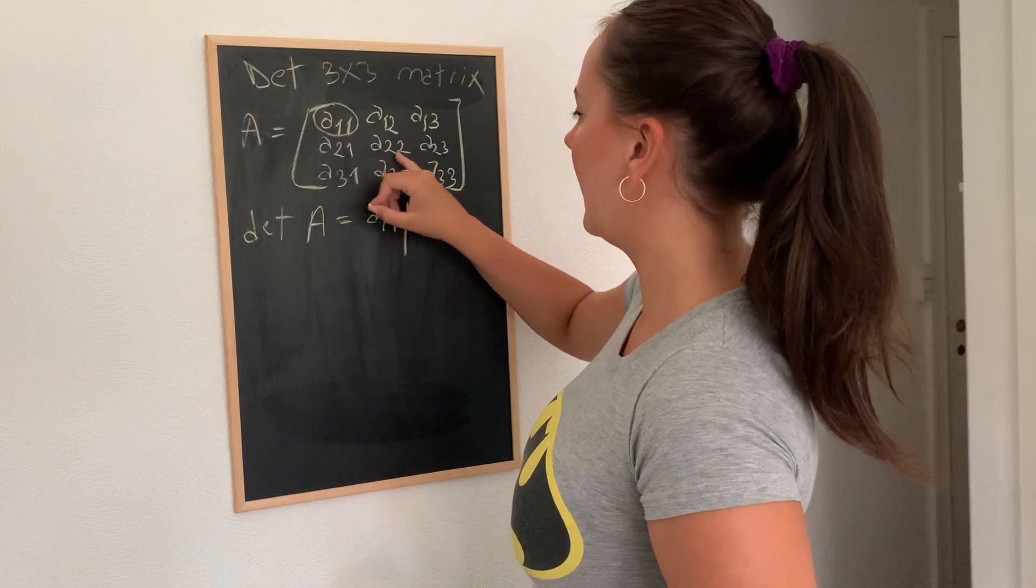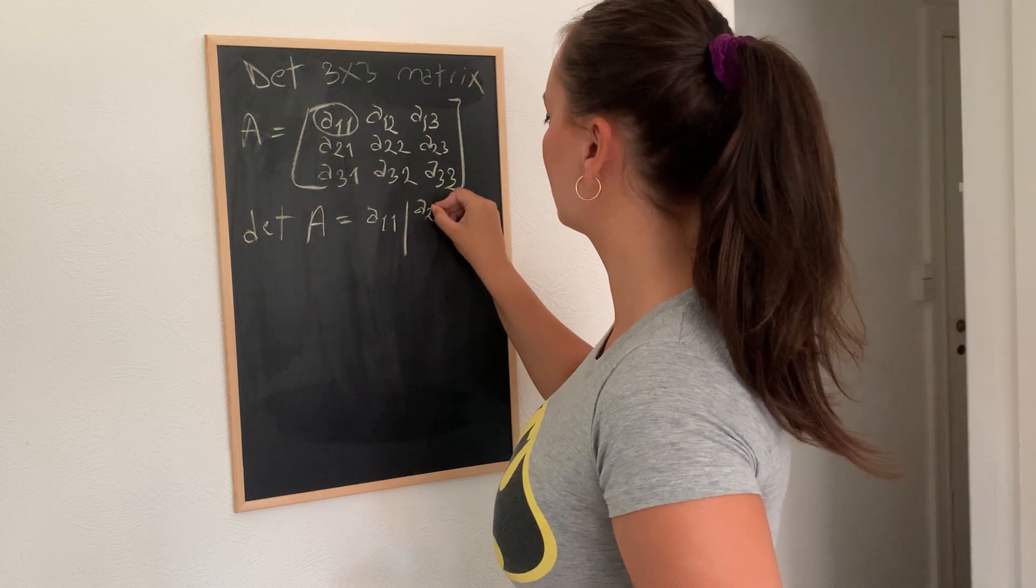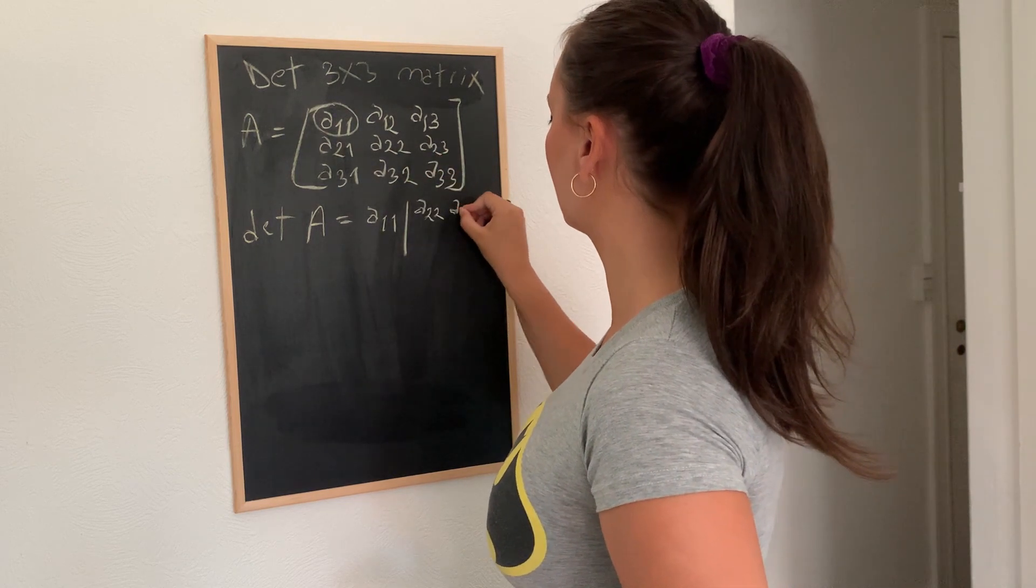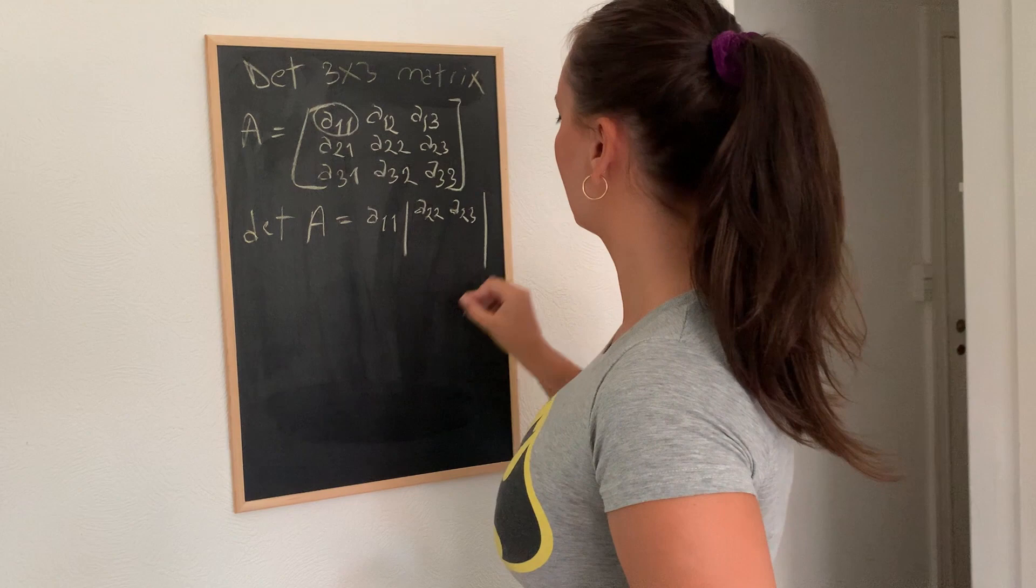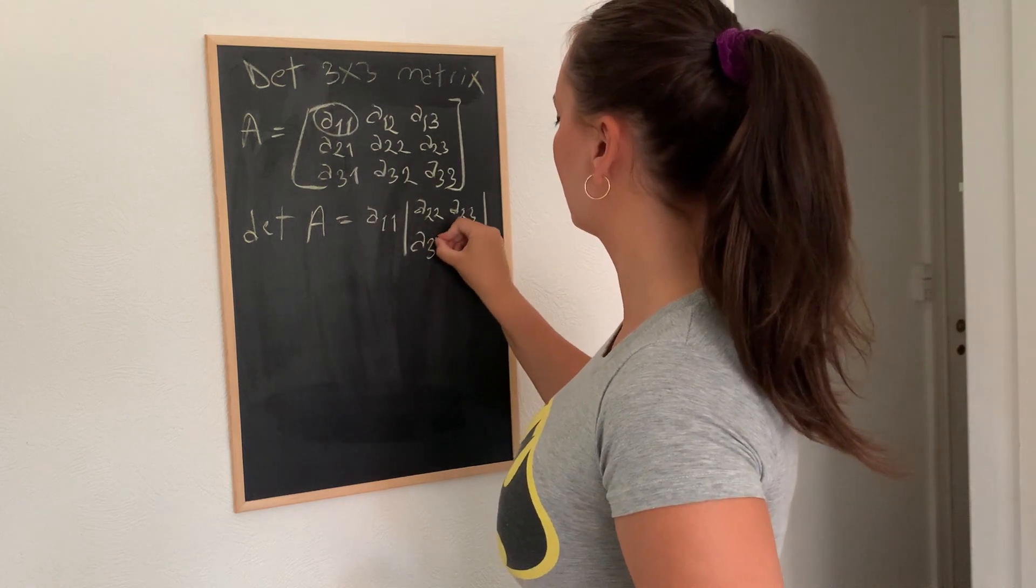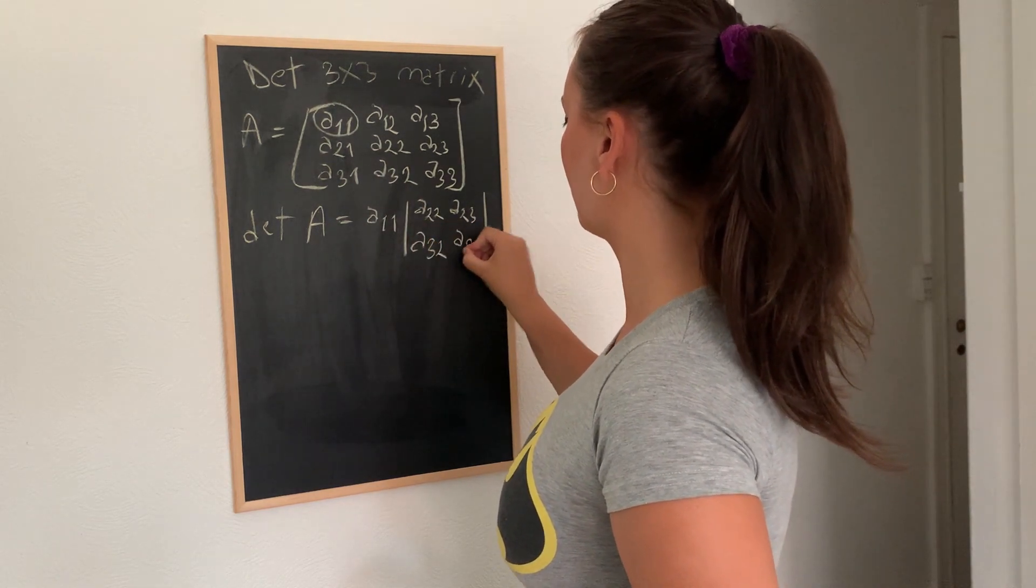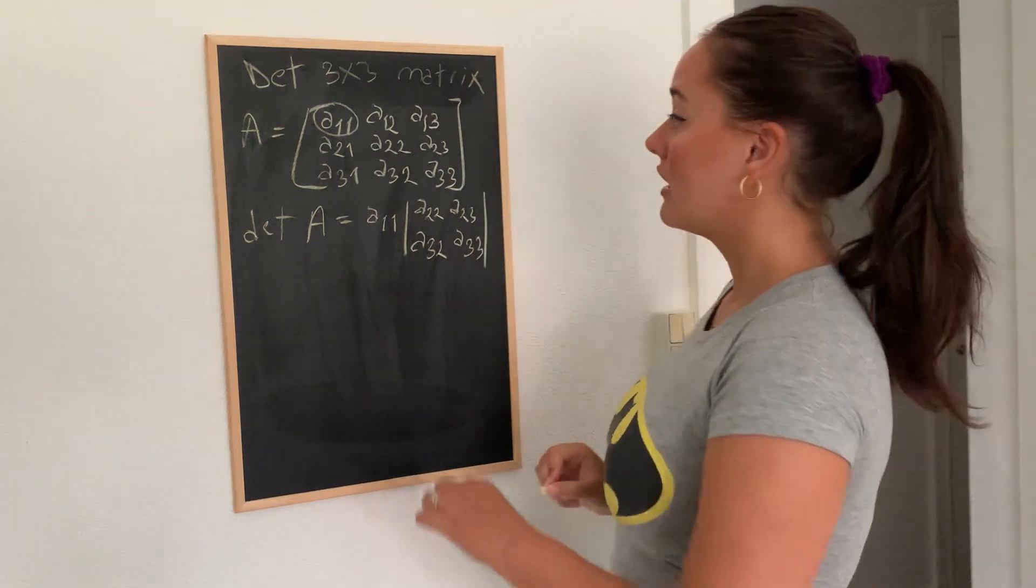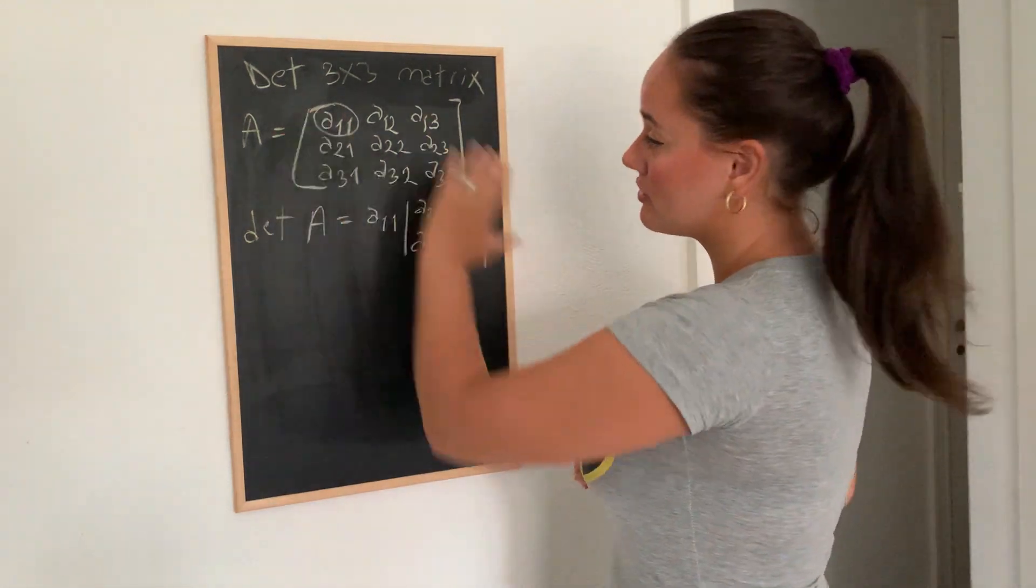And then you have A2,2, A2,3, A3,2, A3,3. All right. So now we took the first element.